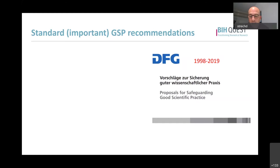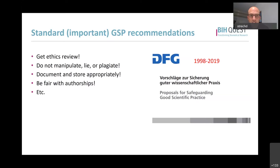Standard, typical good scientific practice recommendations are: get ethics review, do not manipulate, lie, or plagiarize, document and store appropriately, be fair with authorships. All are important recommendations and they have their roots in several challenges that we experience in the sciences - not only in biomedical research, but in many sciences. So they all have their rationales for why we have these rules, and we still have to learn and refine them.